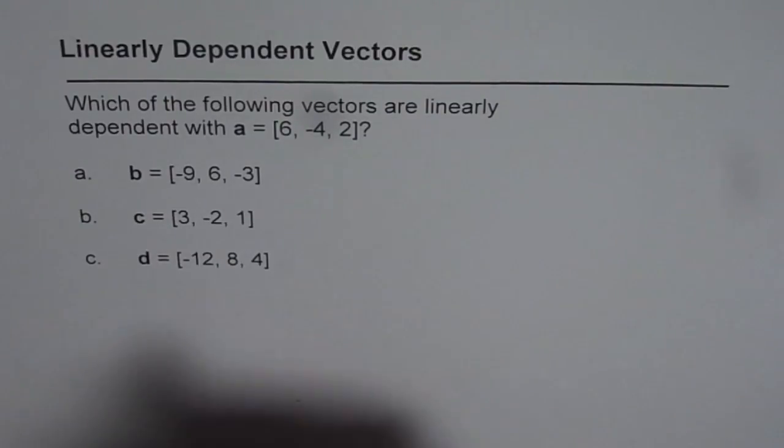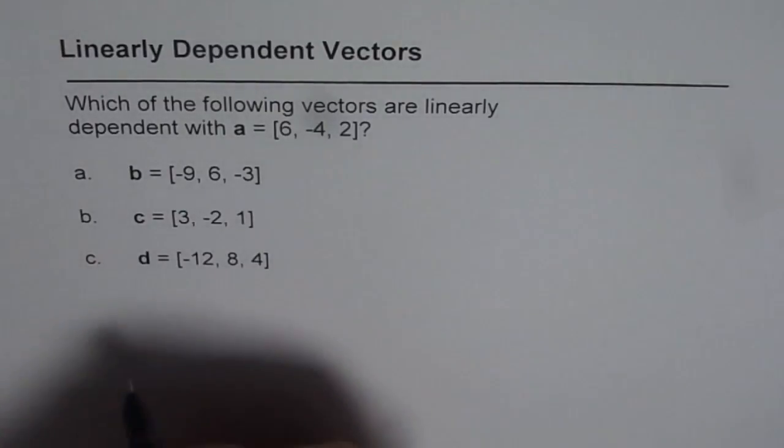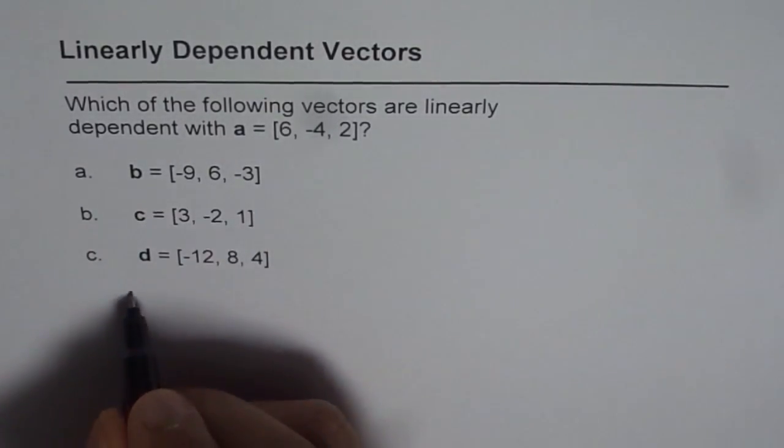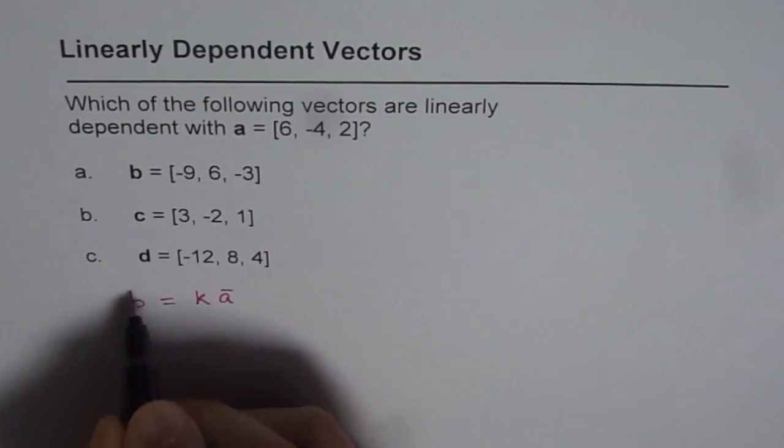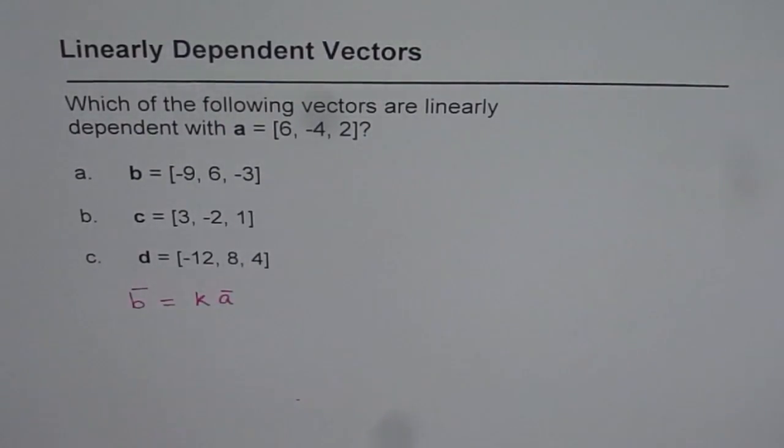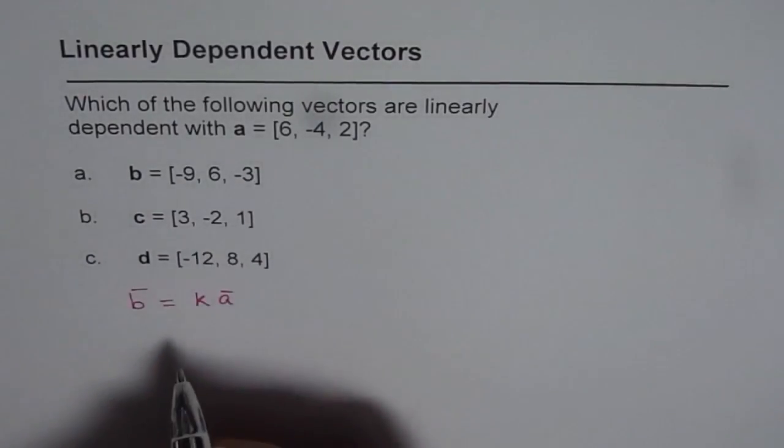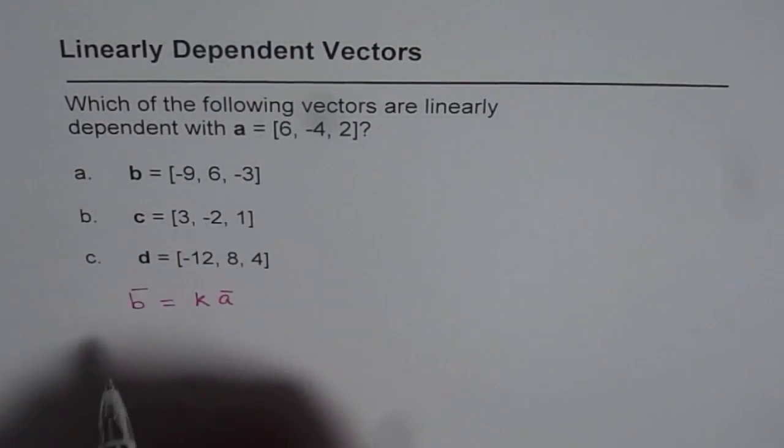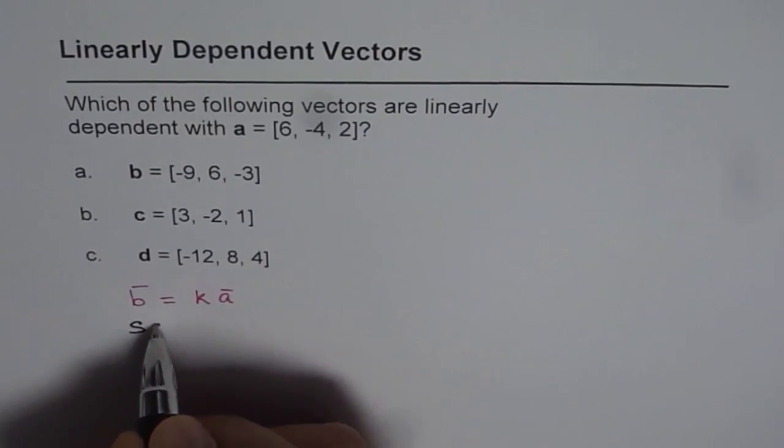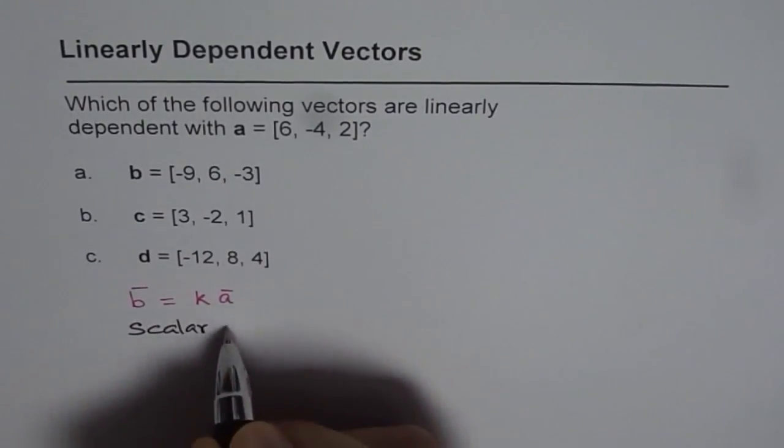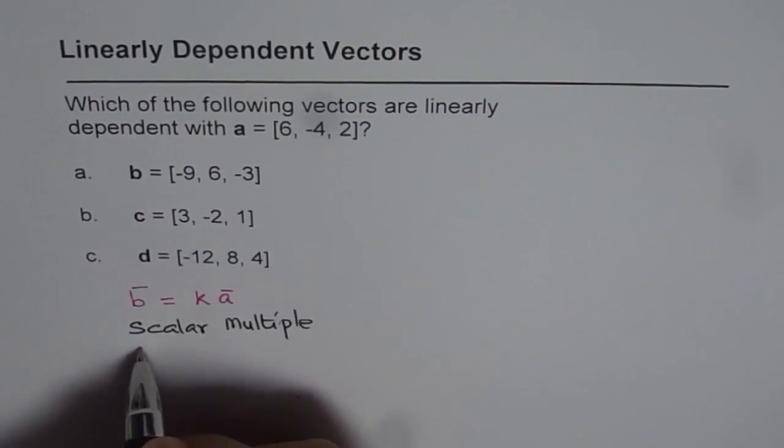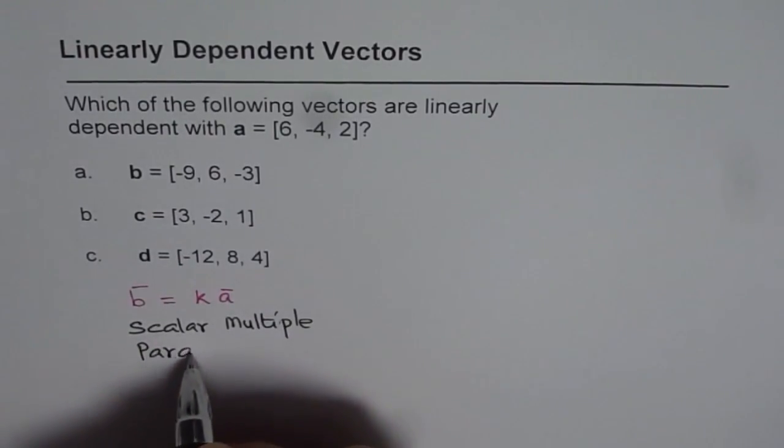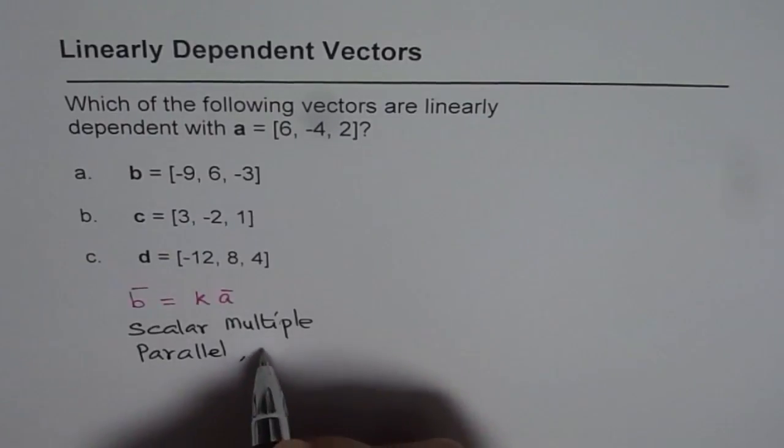Basically, I need to prove that vector B is a scalar multiple of vector A. If I prove this, then I know they are linearly dependent, right? So for linearly dependent, we are trying to prove two things. That is scalar multiple, which really means that the vectors are parallel, or you can also say collinear.